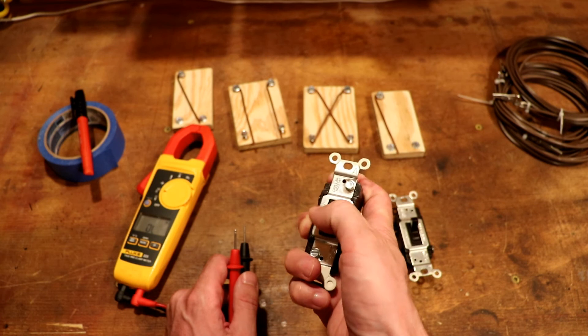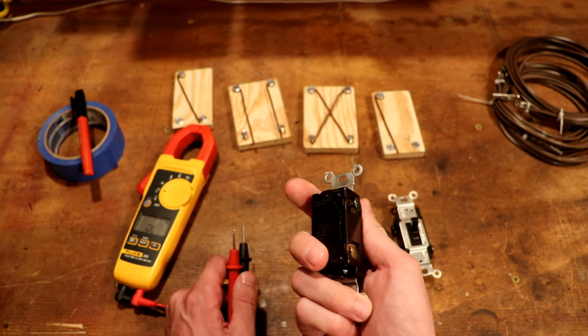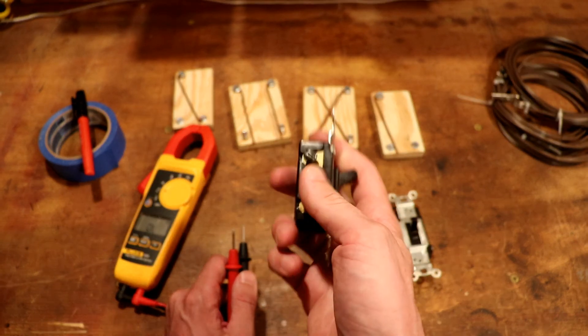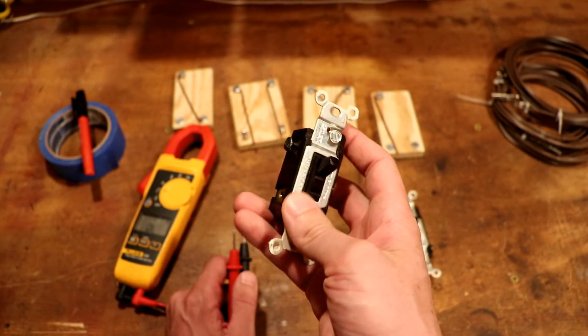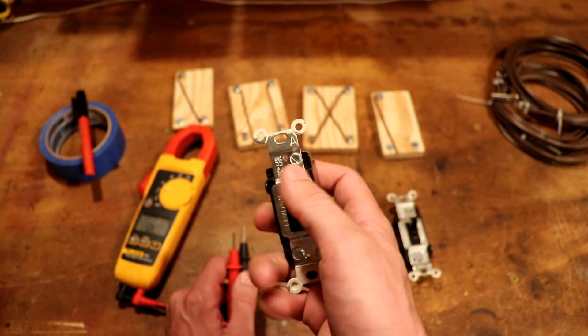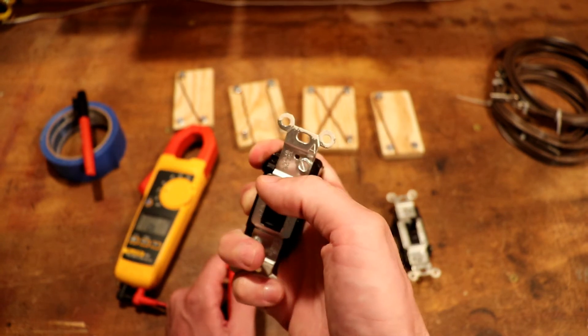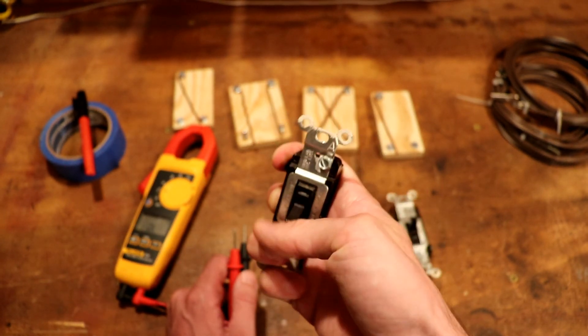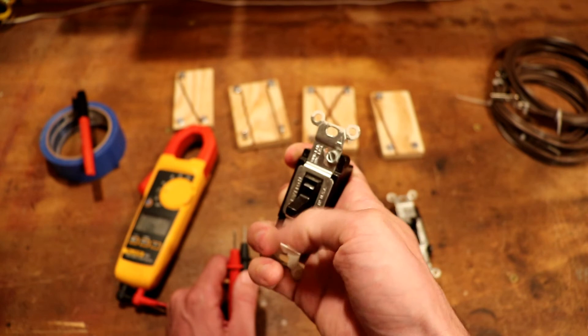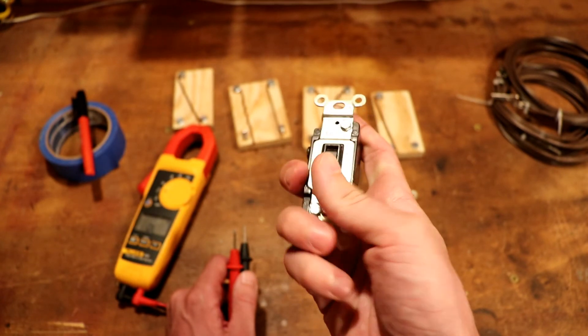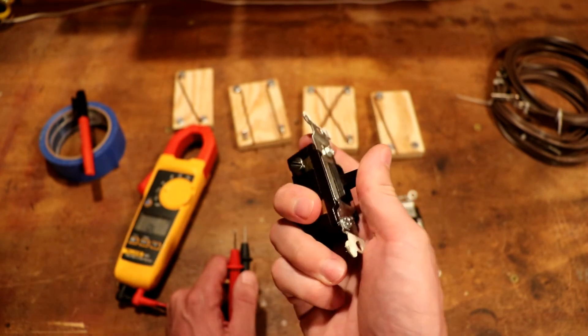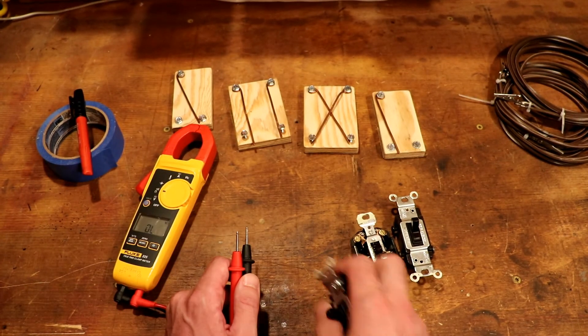Every time you flip a switch, there's a little spark that's created in there and that creates a little microscopic layer of soot over time on the contacts. And eventually they will wear out. If they're giving you a little bit of intermittent problem, quick flips can sometimes kind of break through that layer of soot and make that contact better, but it's a sign that they're on the way out. That's one way to test it with a multimeter.